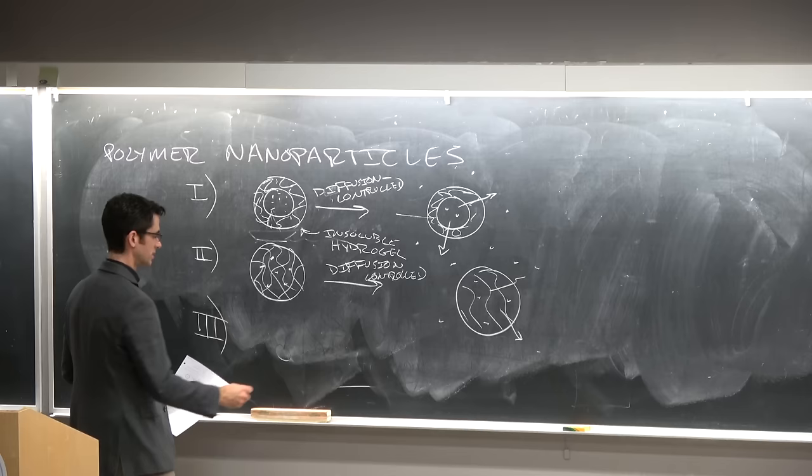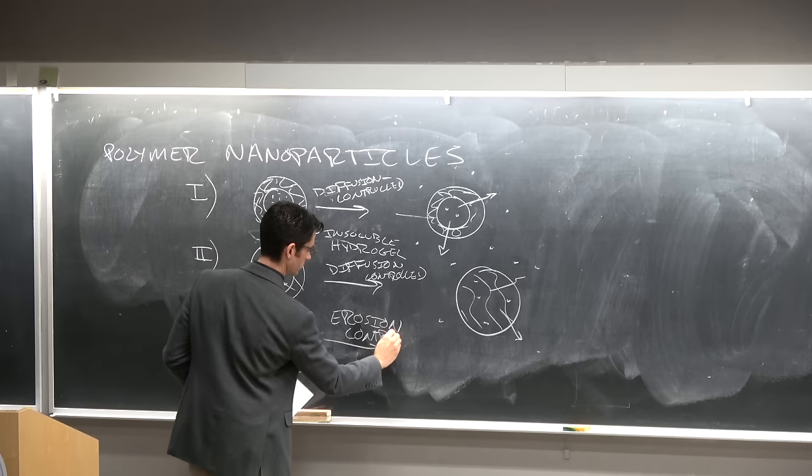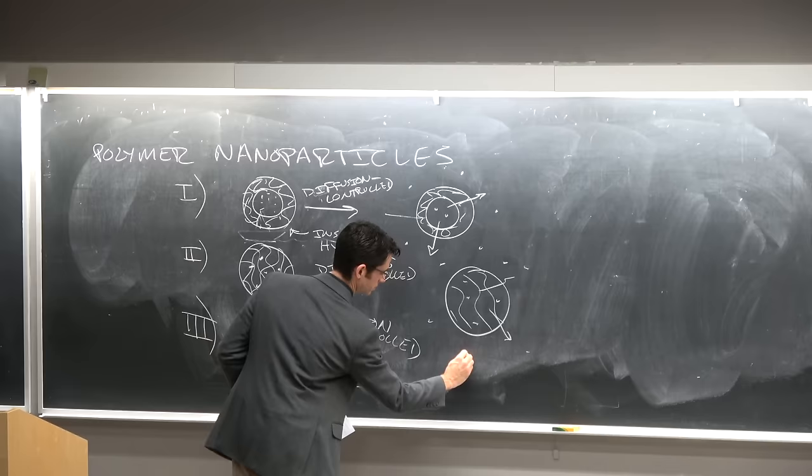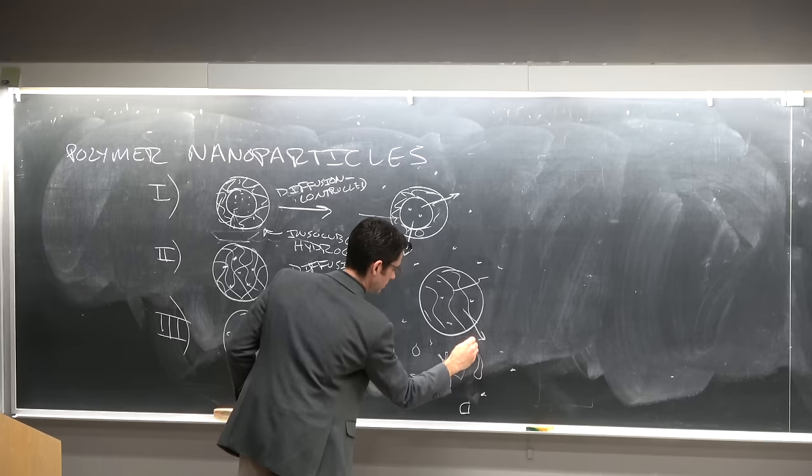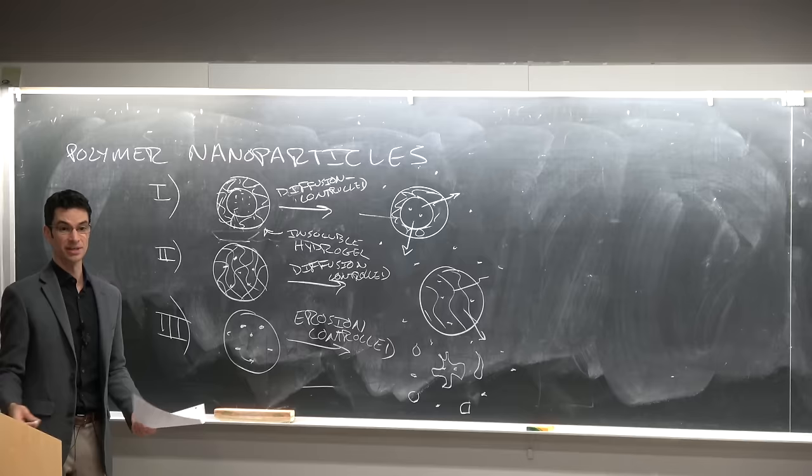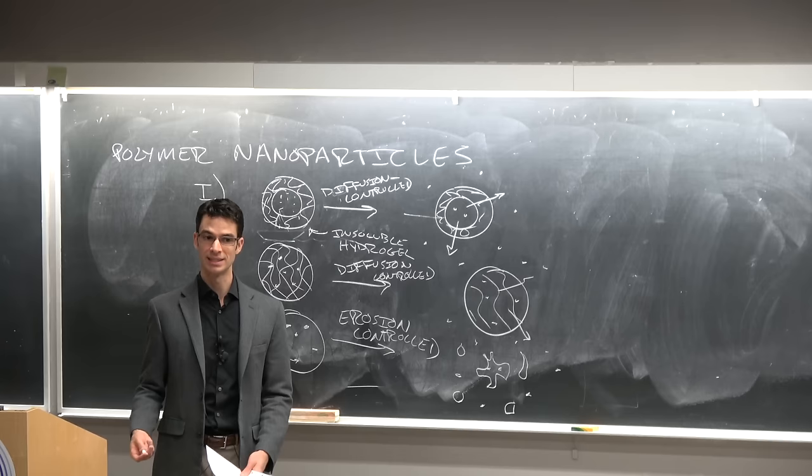But you could also imagine an erosion controlled mechanism where this was a water soluble polymer. Where this particle is dissolving by erosion. And this could be some kind of hydrolyzable particle. And one of the most famous examples is polylactic acid, which you can hydrolyze at physiological pH.